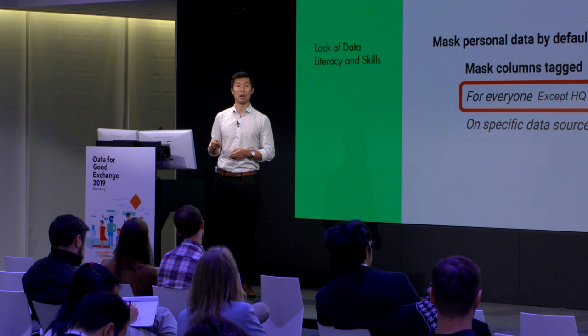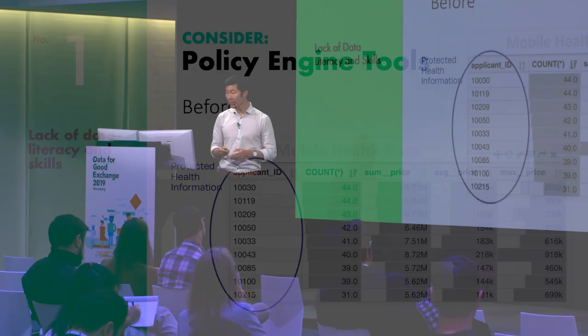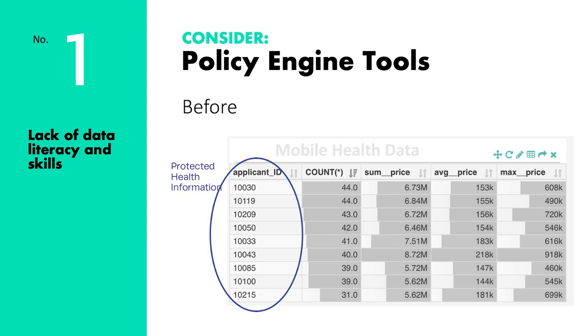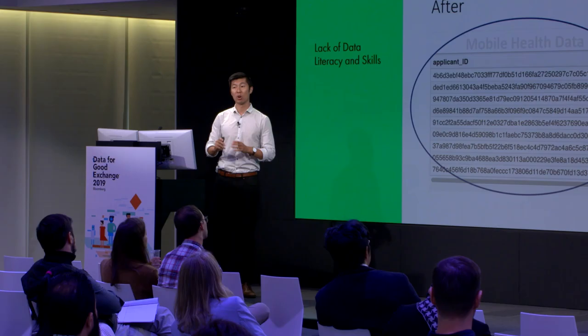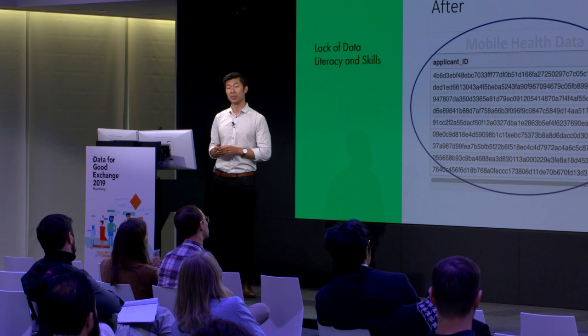In this example, a data policy is created with a drop-down menu. This is the highly sensitive data that was previously exposed, and once the data policy was created, it can create an irreversible hash on that sensitive data set across all of your data sources. Tools like this can dramatically help with the data literacy problem that data trusts are currently experiencing.